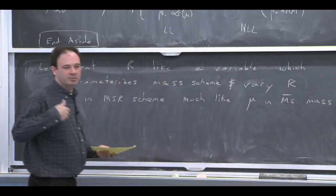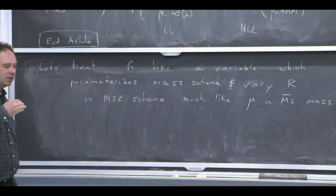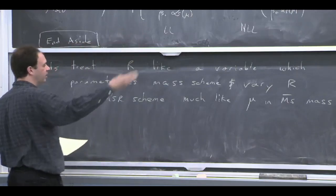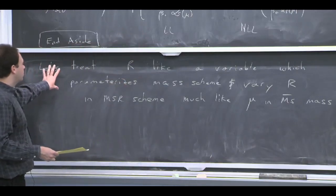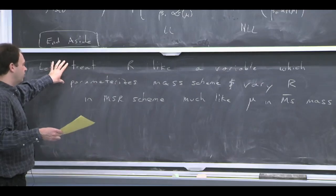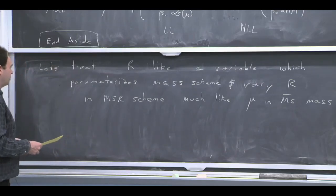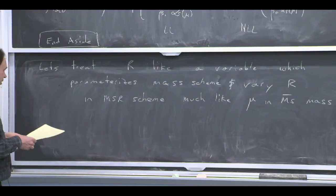So if you like, what you're doing when you vary mu in the MS bar scheme is you're properly taking into account what fluctuations you want to put into your mass in the ultraviolet. And here, it's related to this kind of physics that's going on in the deep infrared that you're also being careful about.